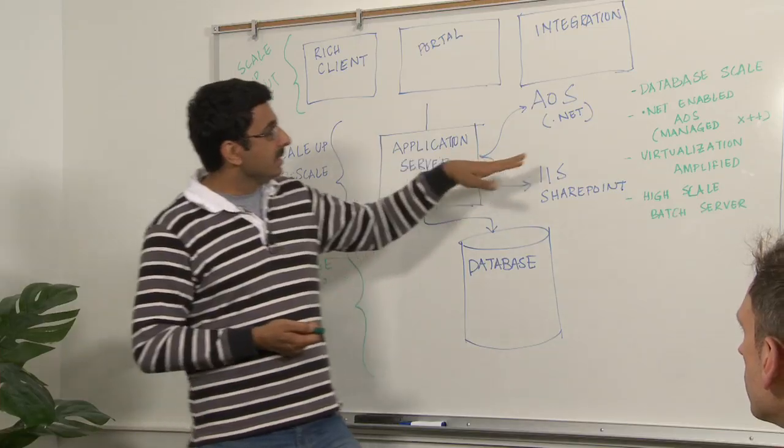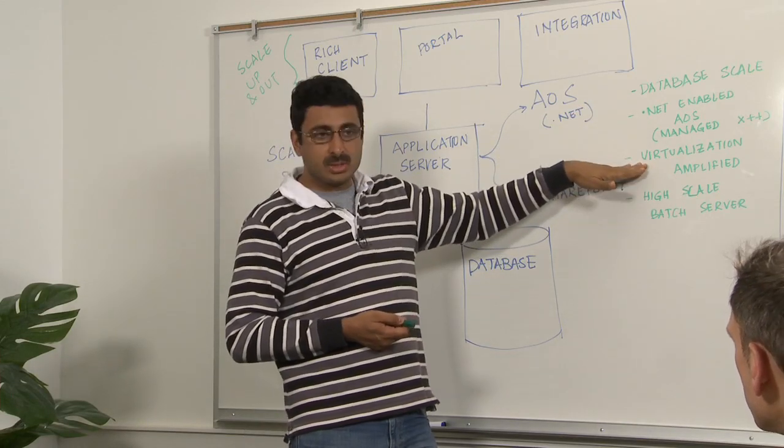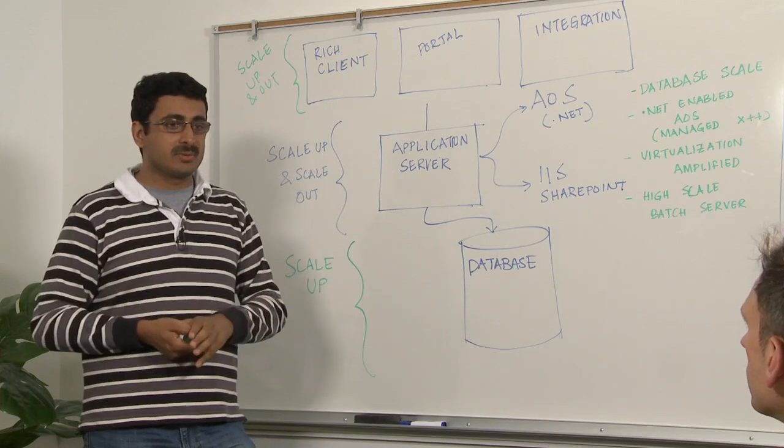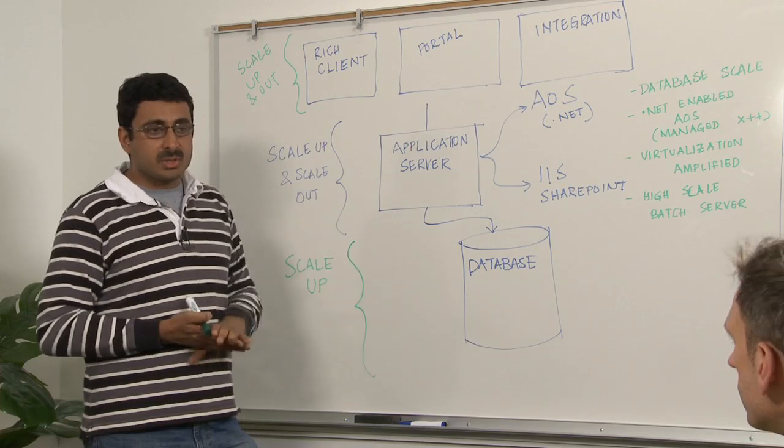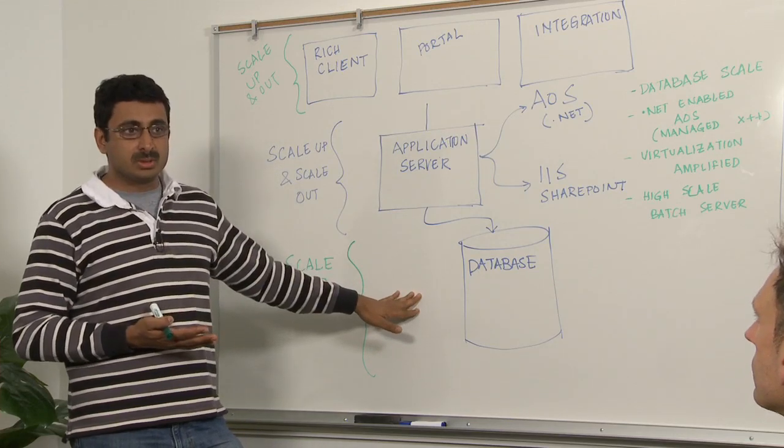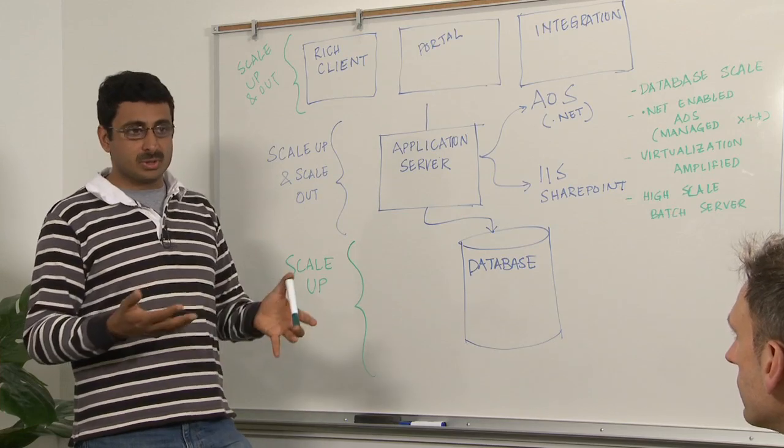And all up, the scalability is database scale, the .NET enablement, virtualization. Virtualization technologies have come to the fore. So application servers can be virtualized, all the client stuff can be virtualized, the database can run virtual. So your whole ecosystem, in a sense, can be run off virtualized environments.